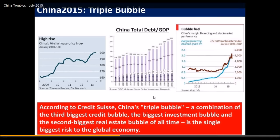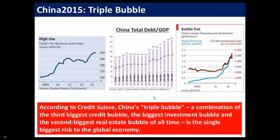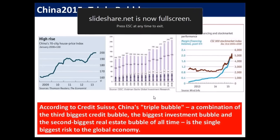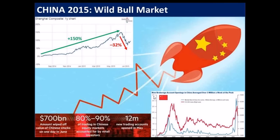Credit Suisse's global research team stated it's a combination of the third biggest credit bubble, the biggest investment bubble, and the second biggest real estate bubble of all time — making the China situation currently the single biggest risk to the global economy. If you look at China's history, they're about as far into their adolescence as a capitalist economy as the U.S. was in the 1920s. The roaring 20s was the first time the United States had allowed margin-financed equity trading, which largely led to the bubble forming. Almost a hundred years later, another country is making the same mistakes.